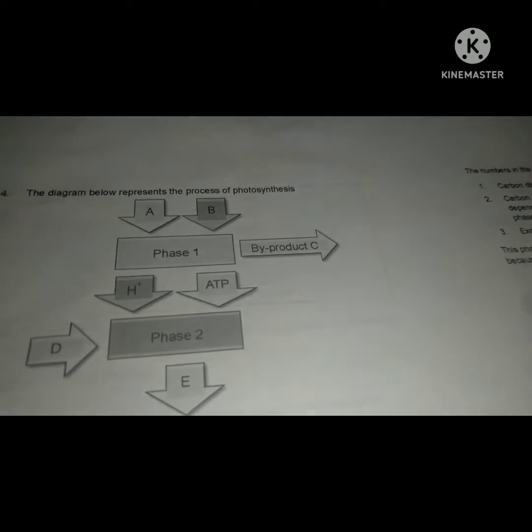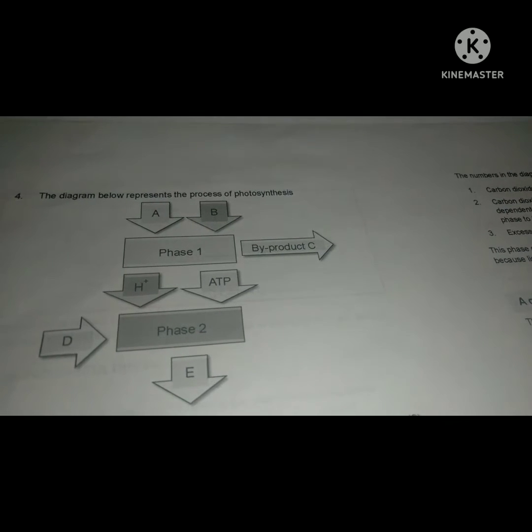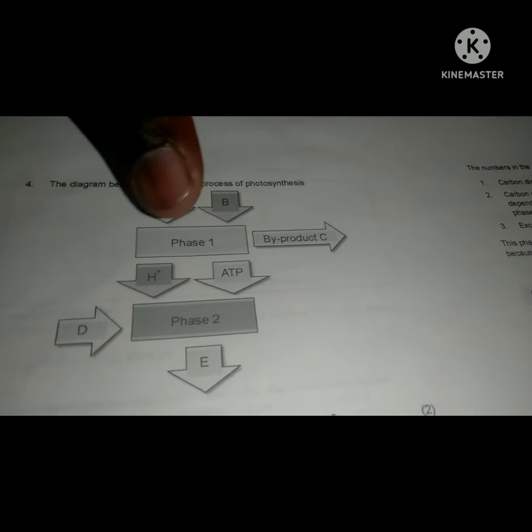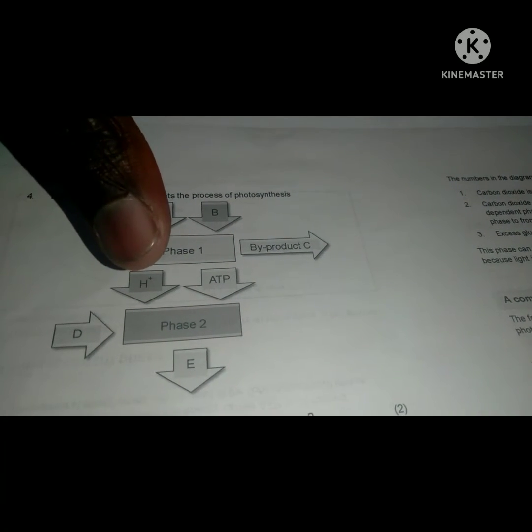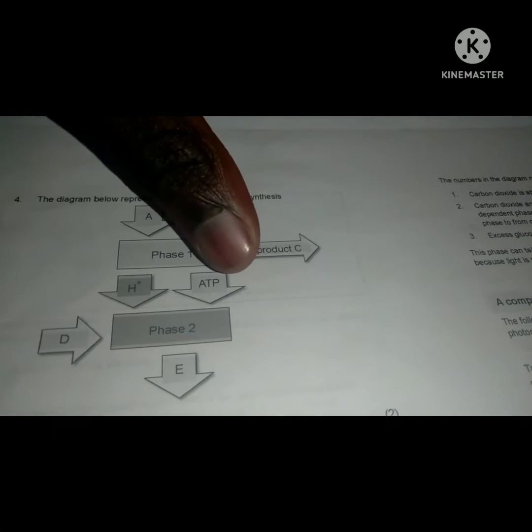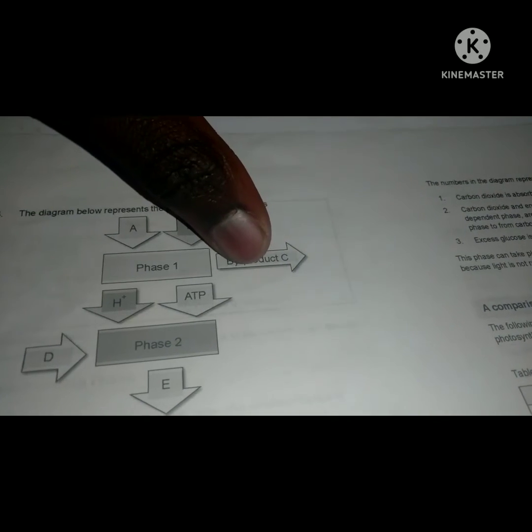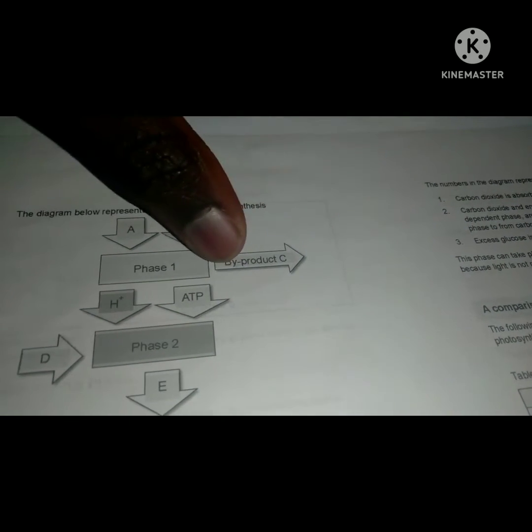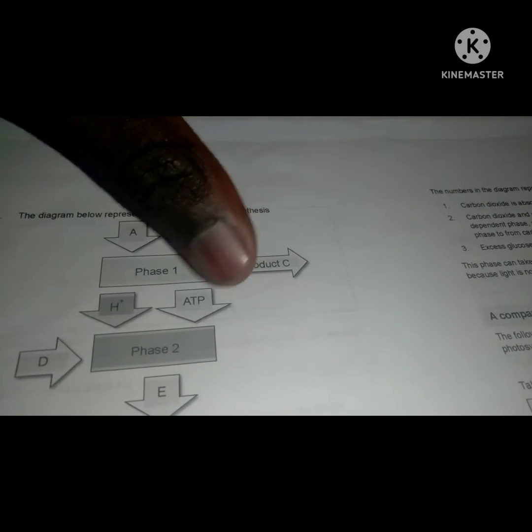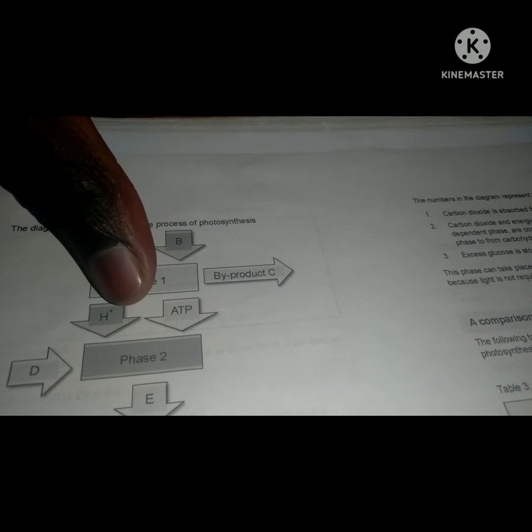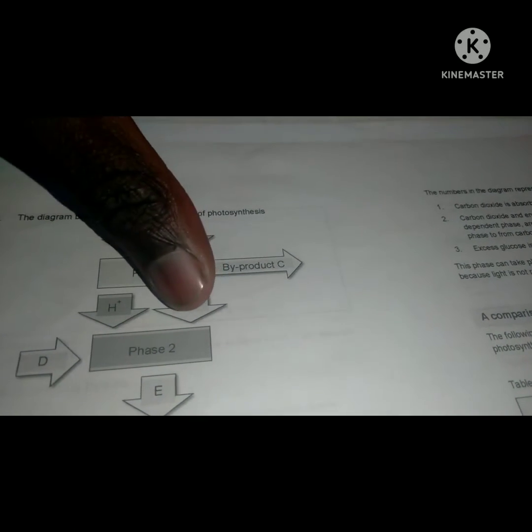Phase 1 is the light phase because after phase 1 we have the product which is energized hydrogen, then we have ATP, and we've got oxygen byproduct C which goes away into the atmosphere. It doesn't get involved into phase 2. These arrows on H+ and ATP indicate that H+ and ATP are going to phase 2. Byproduct C does not go to phase 2.